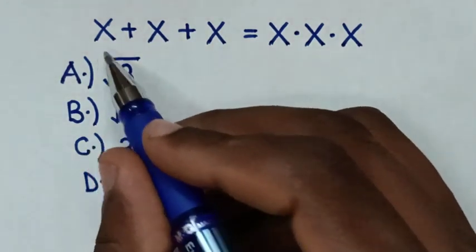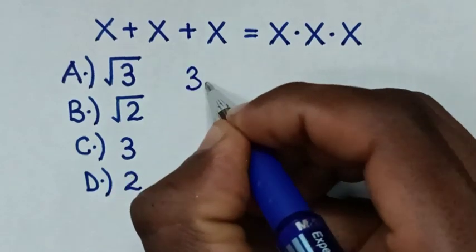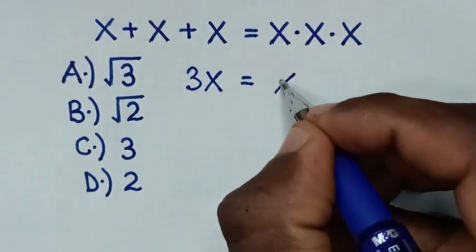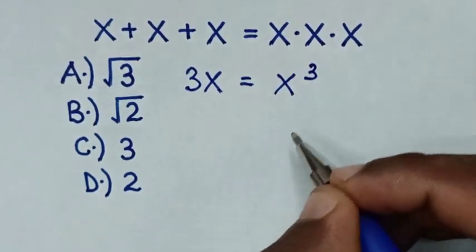So, x plus x plus x is 3x, and this equals x times x times x, which is x to the power 3.